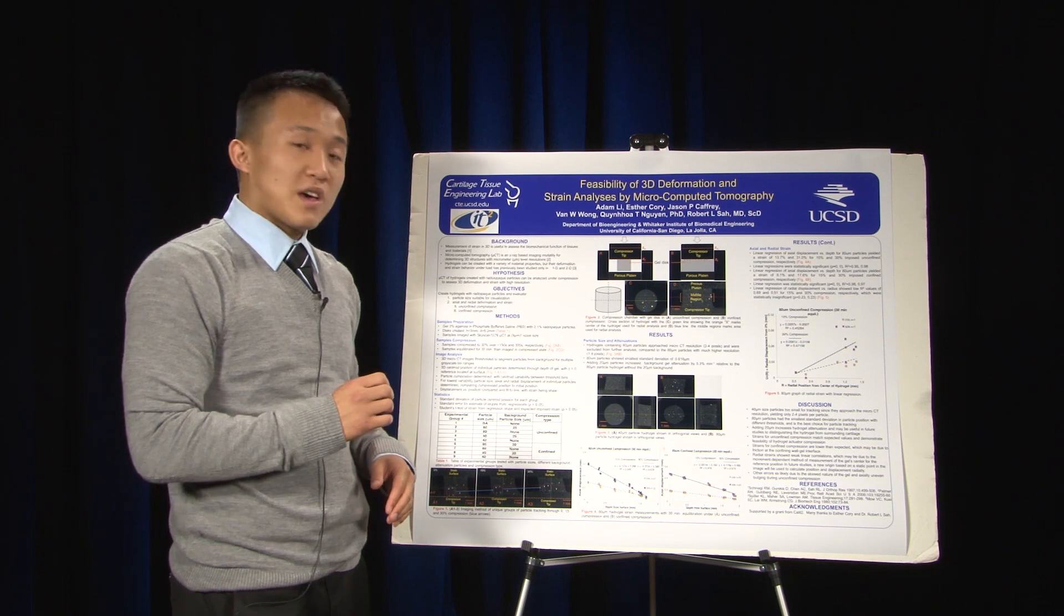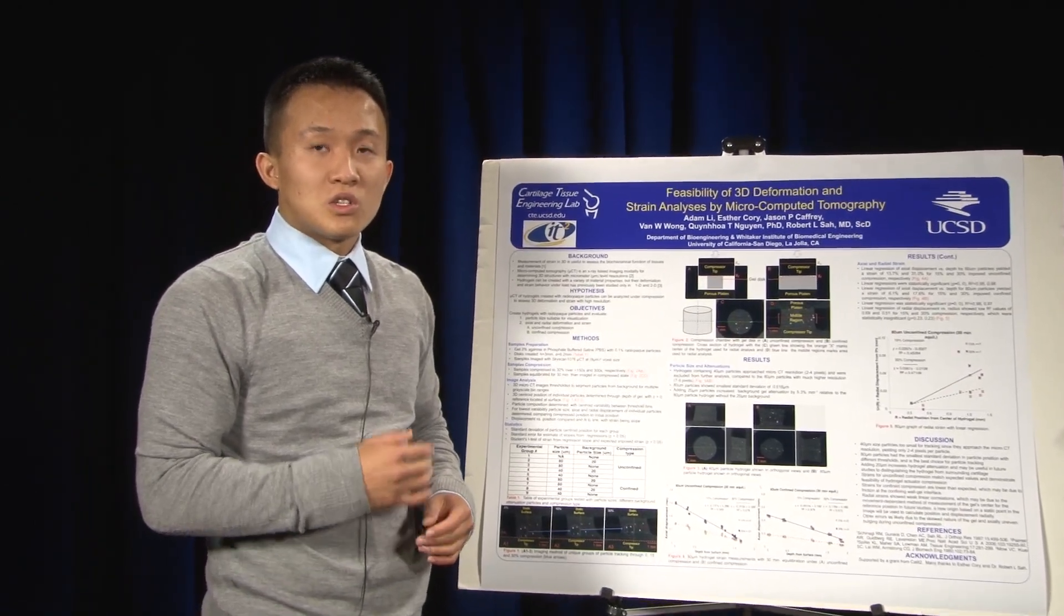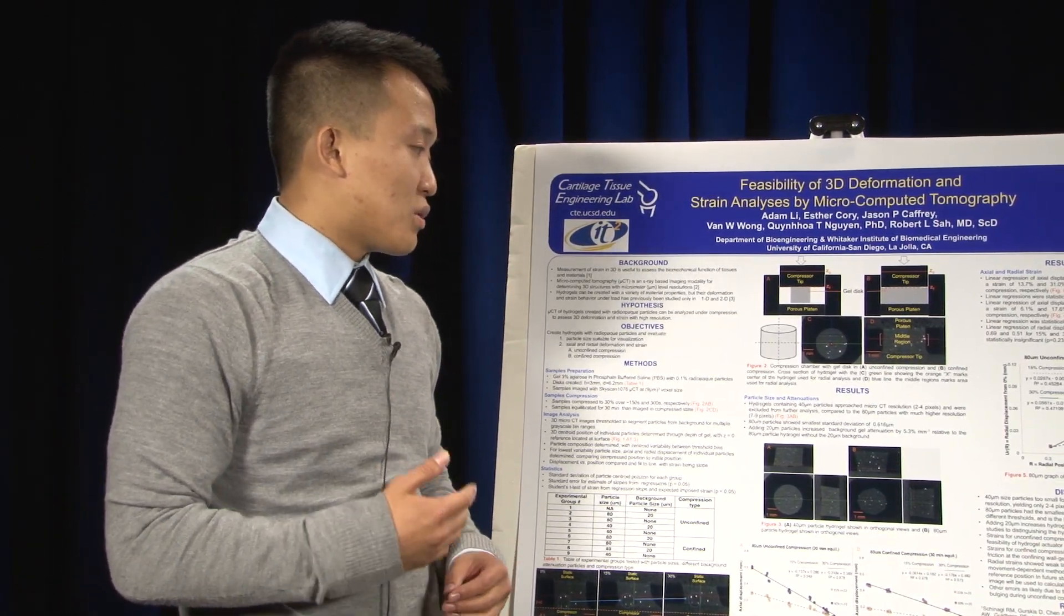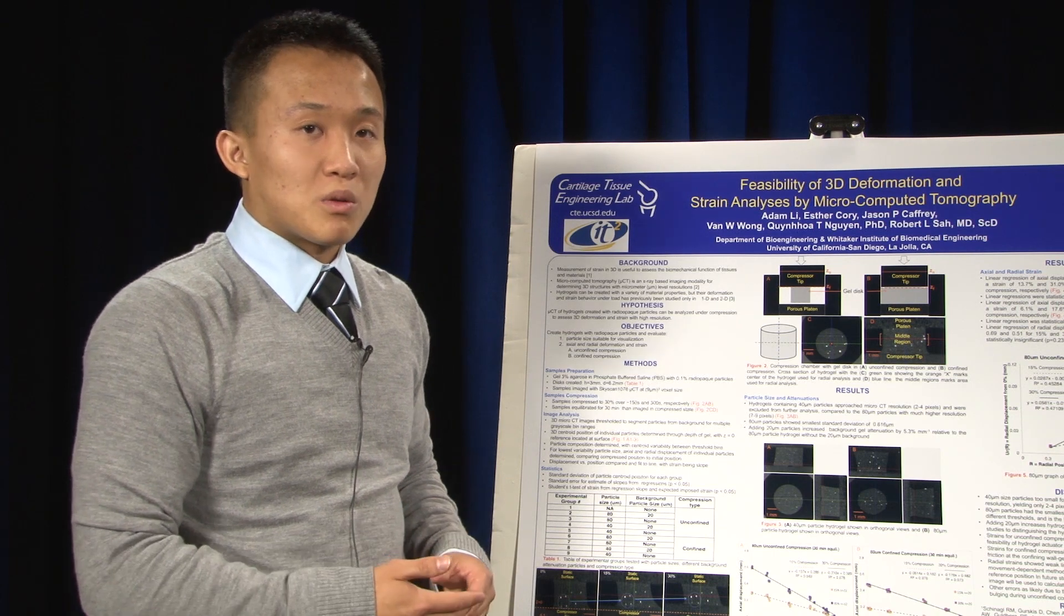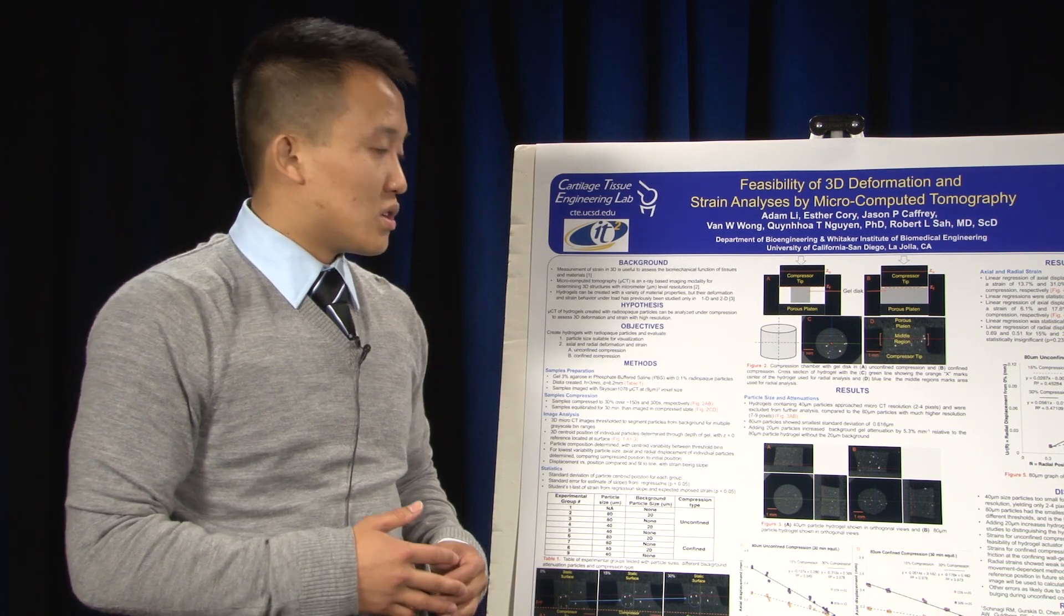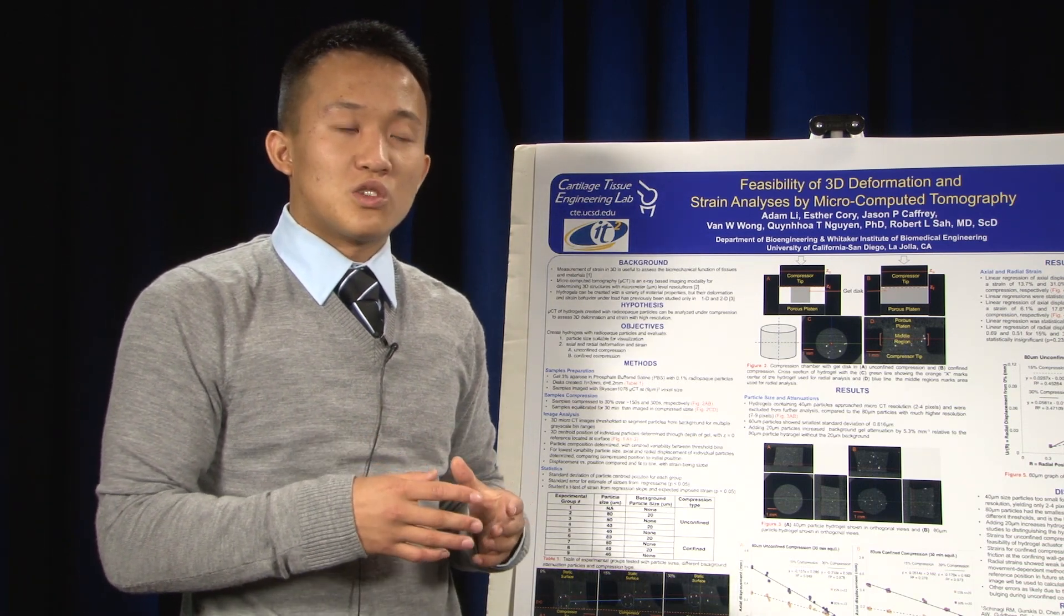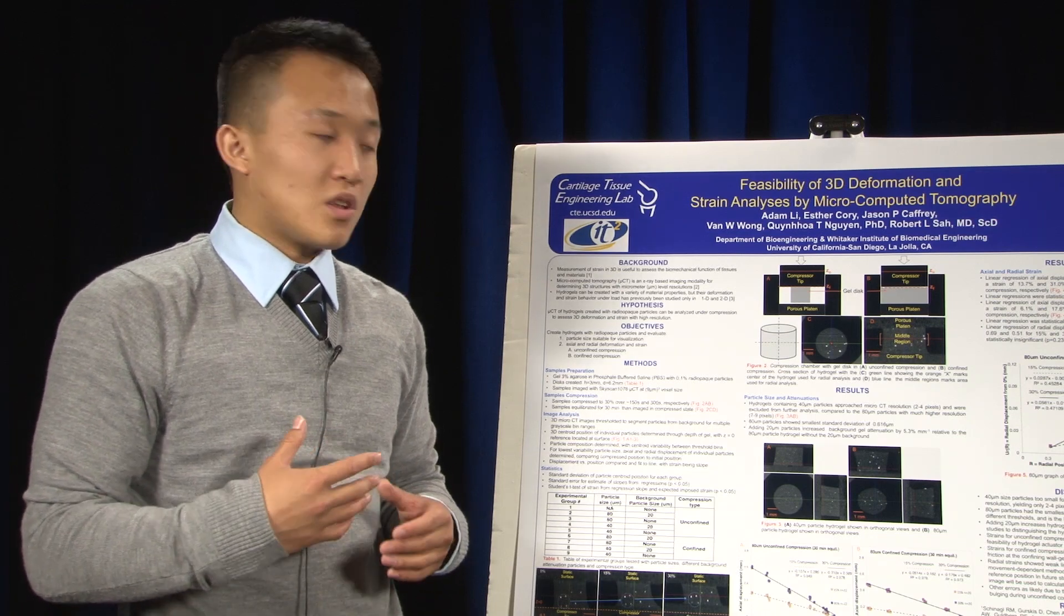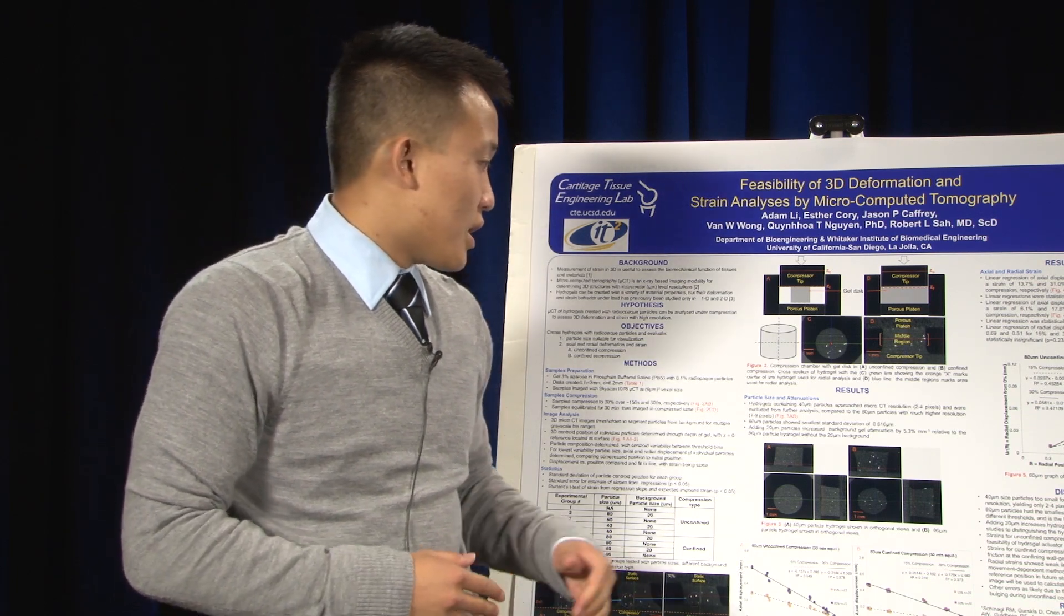First, we showed that the 40-micrometer-sized particles were too small for tracking, since they only approached resolution of 2 to 4 pixels, and that's too small to accurately display and to accurately track. The 80-micrometer particles had a small standard deviation in particle position, so we know that our thresholding range is accurate enough to track 80-micrometer particles. And also, adding the 20-micrometer particles increased background attenuation enough to help in future studies. Say, we might be interested in testing cartilage, and in order to test cartilage, perhaps we want to use a hydrogel and test it with the cartilage. In order to distinguish the hydrogel from the cartilage, the 20-micrometer background attenuation would be useful.